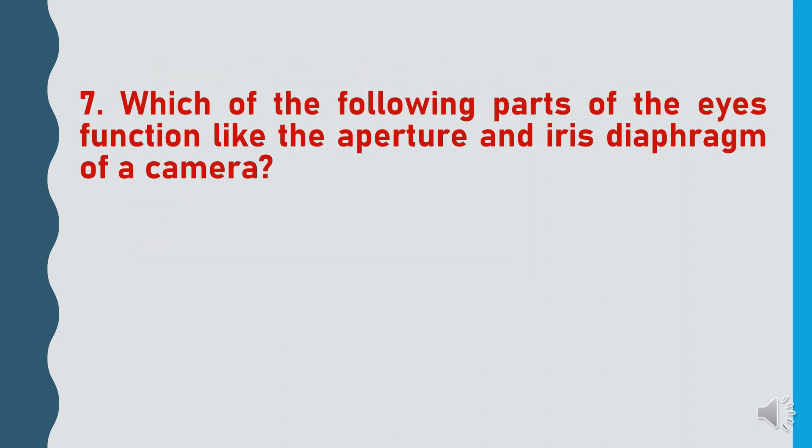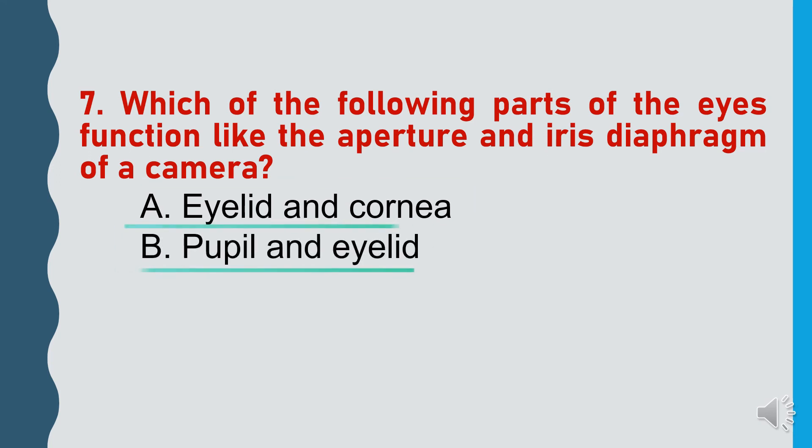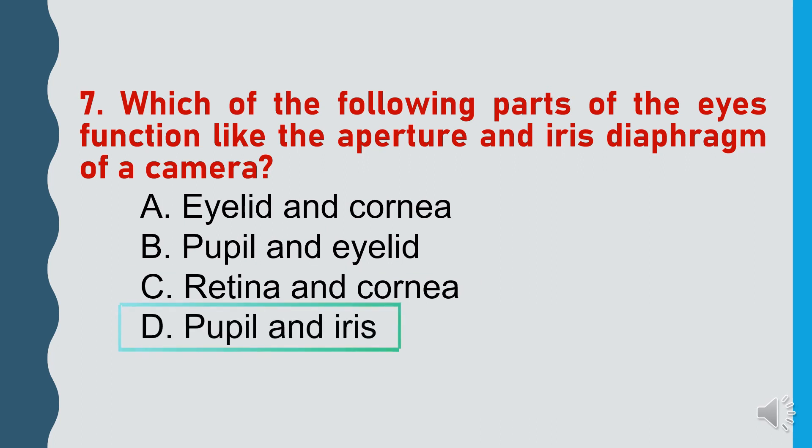Which of the following parts of the eyes function like the aperture and iris diaphragm of a camera? Eyelid and cornea, Pupil and eyelid, Retina and cornea, or Pupil and iris.